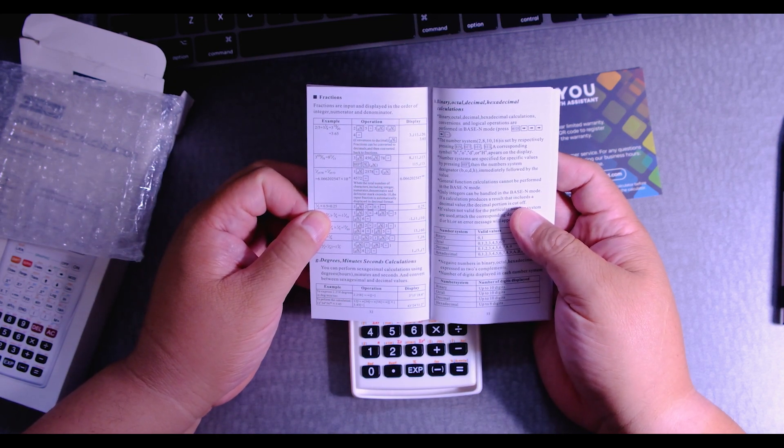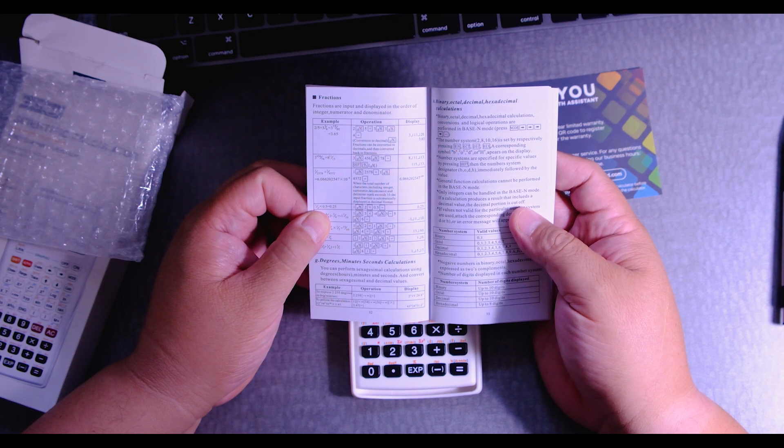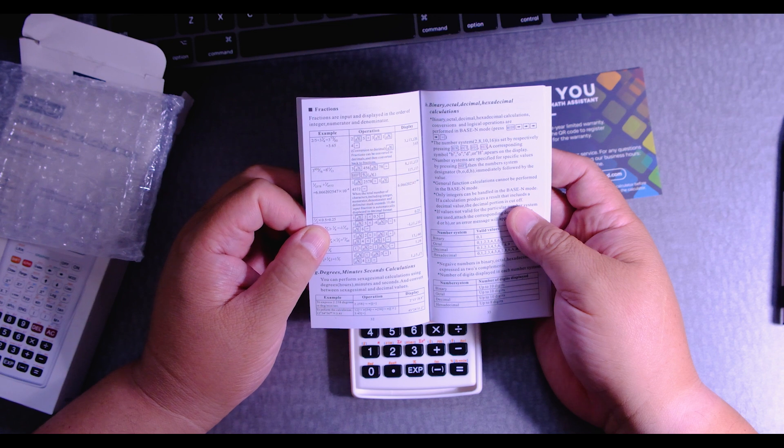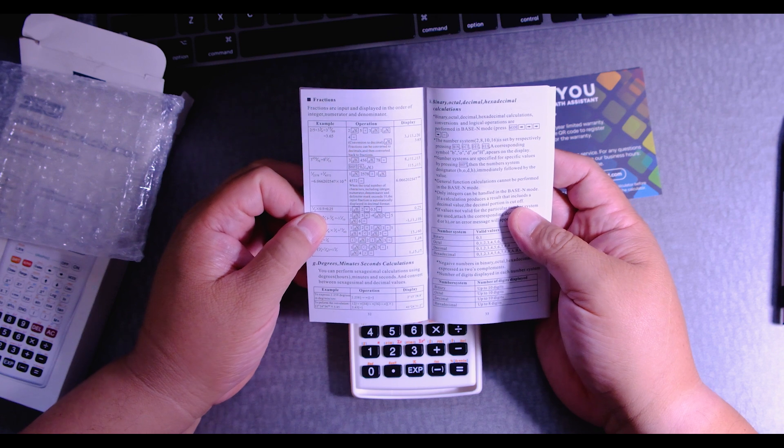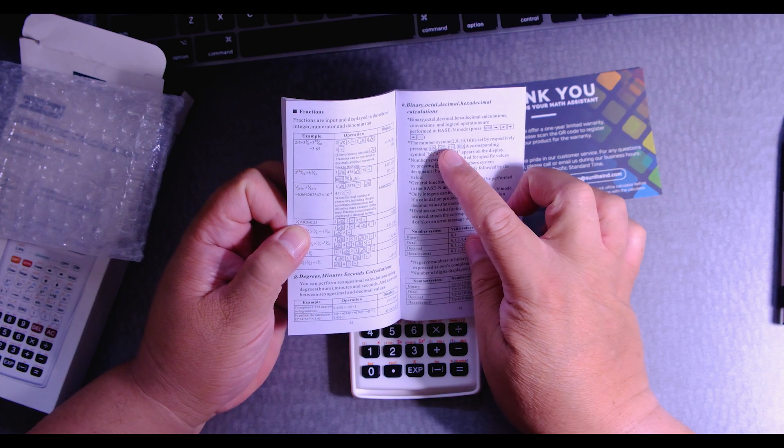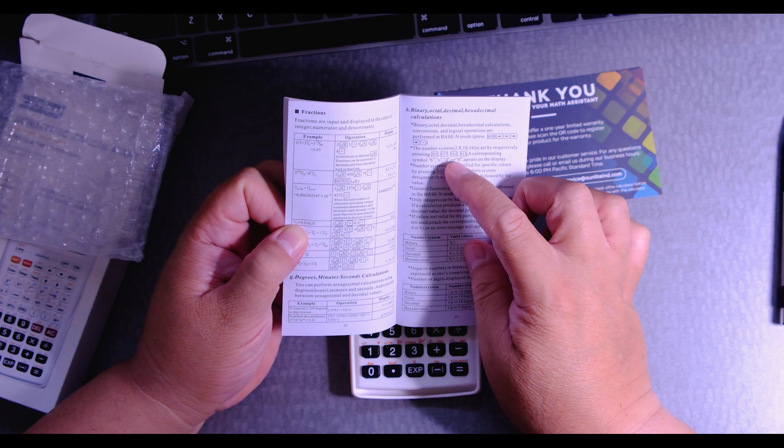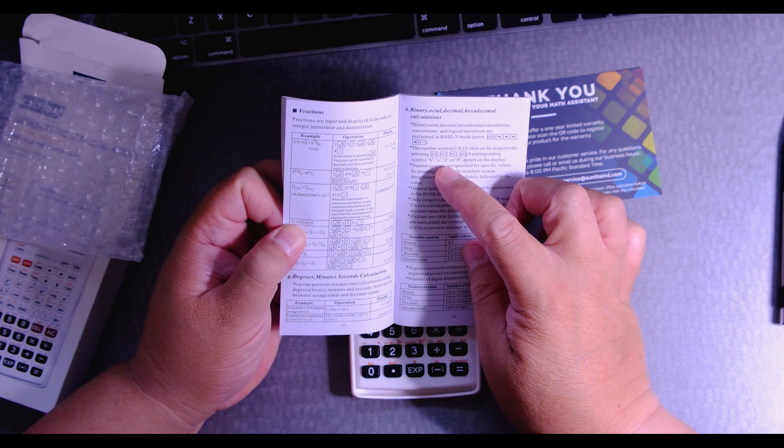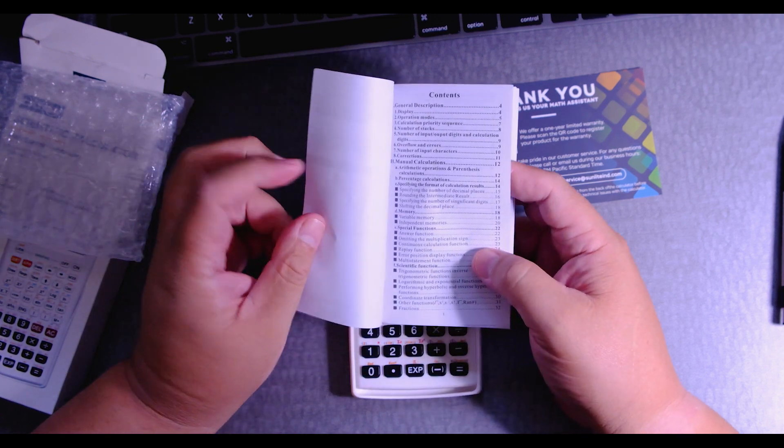You can perform sexagesimal calculations. Never heard of that. Let's see. Not very easy. The number system 2, 8, 10, 16 is set by respectively pressing the bind, oct, decimal, hexa corresponding to symbols B, O, D, and H.